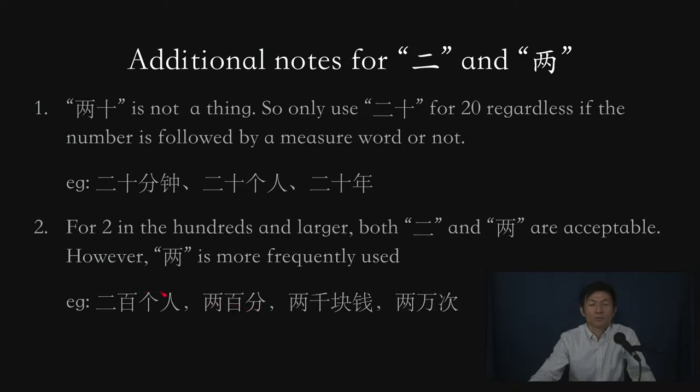However, for larger numbers, 两 seems to be more frequently used. I would tend to say 两千块钱 instead of saying 二千块钱, 两万次 instead of saying 二万次.